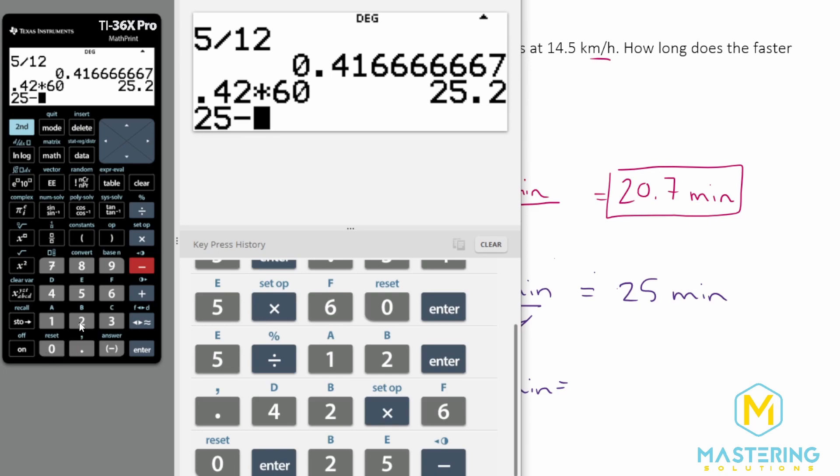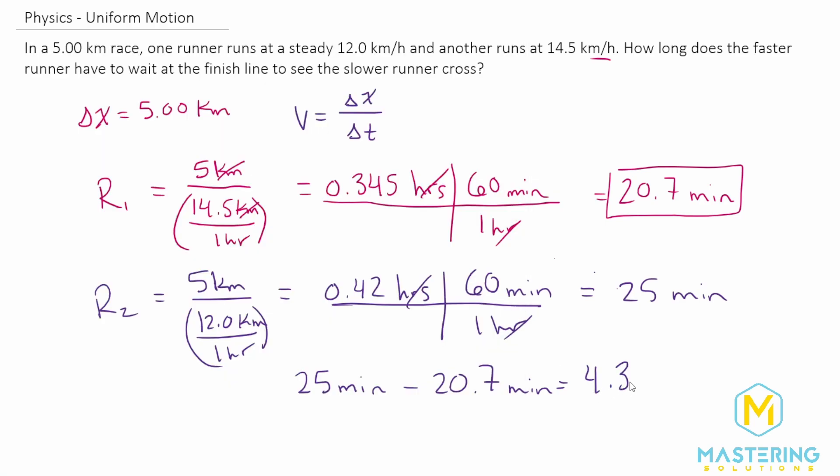20.7 minutes, and we have 4.3 minutes for how long the faster runner had to wait until the slower runner finished the race.